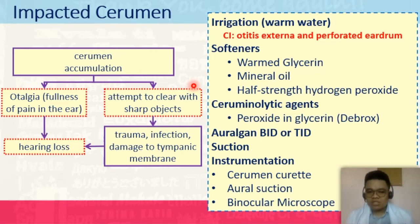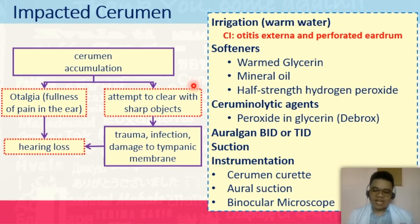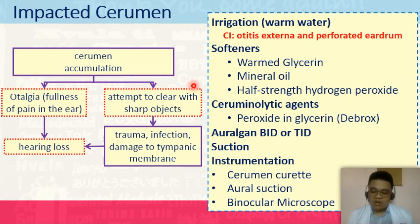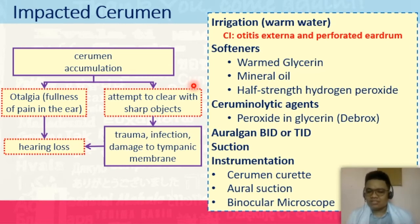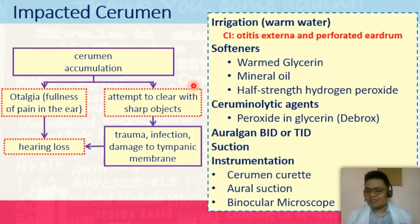What are the signs and symptoms for a patient with impacted cerumen? Often the patient will complain that there is something inside their ear. A baby or child may become irritated because of otalgia — pain in the ear. They would have hearing loss if this continues. Some patients, due to irritation, will attempt to clear the outer ear with sharp objects. This clearing could lead to trauma, infection, and damage to the tympanic membrane, also leading to conductive hearing loss. So, conductive hearing loss in impacted cerumen is twofold: due to the impaction itself, and then due to instrumentation in an attempt to clear it.